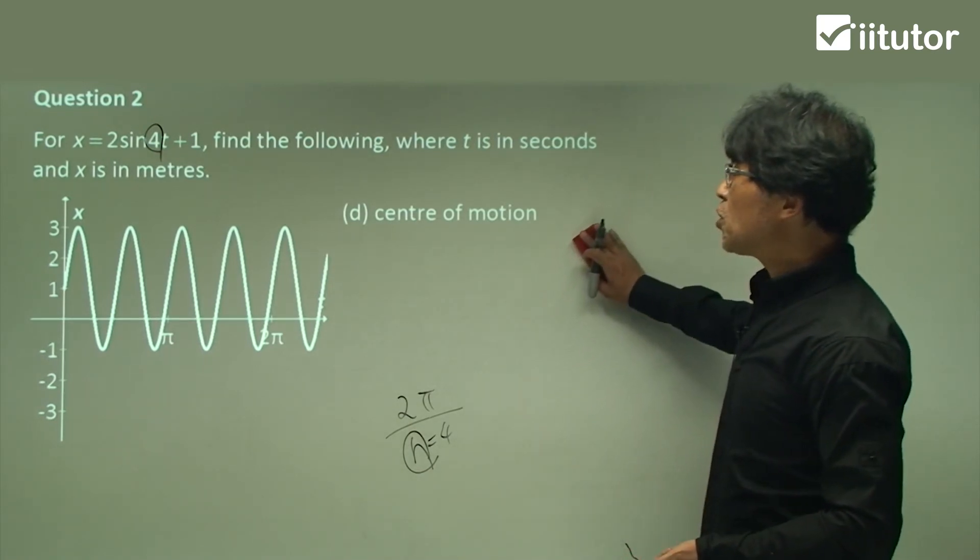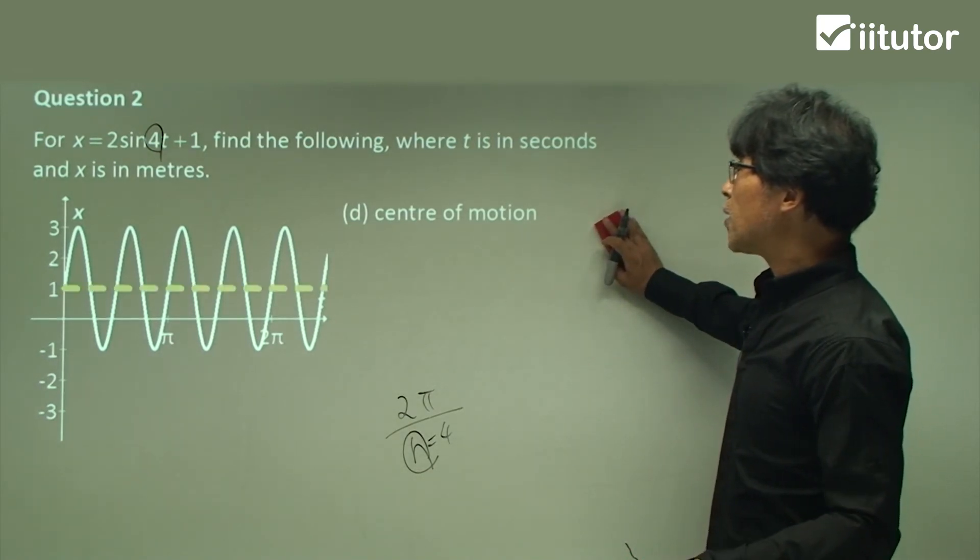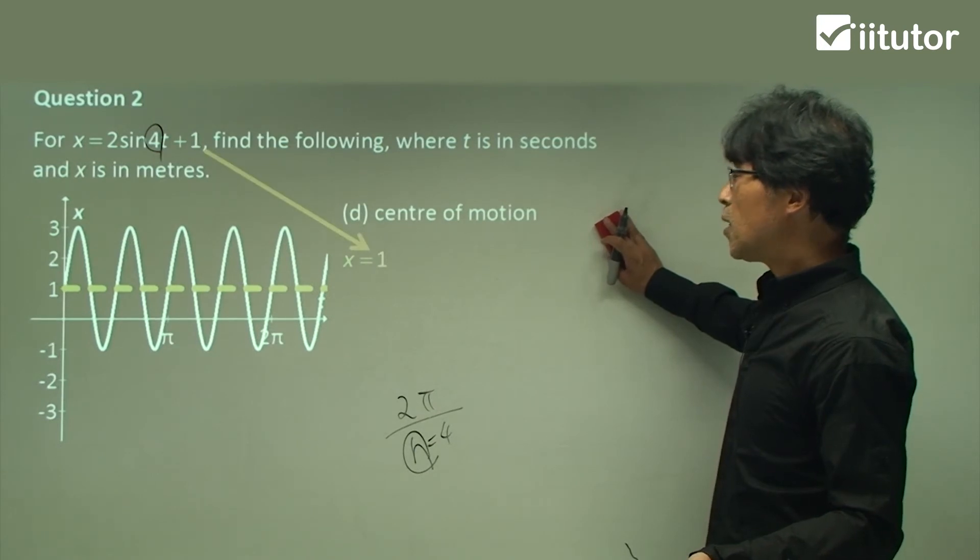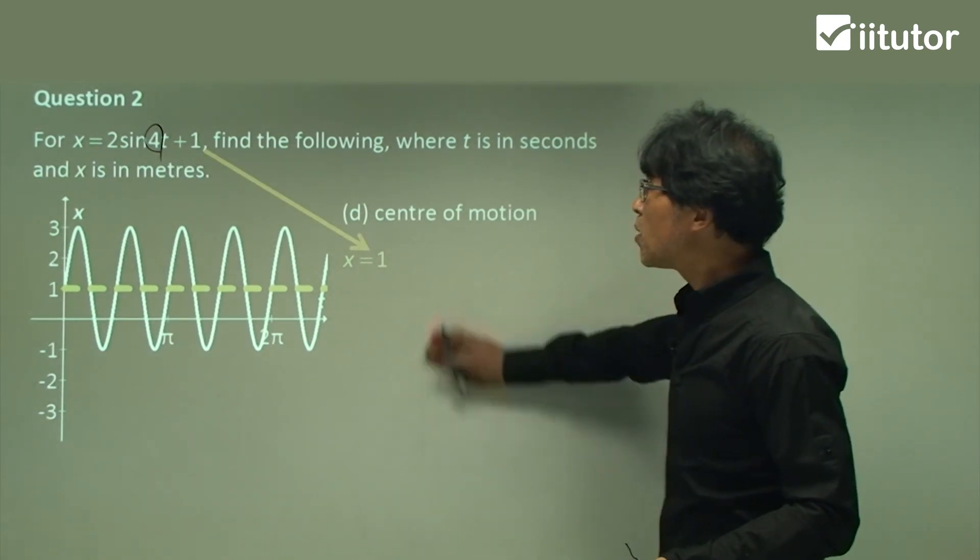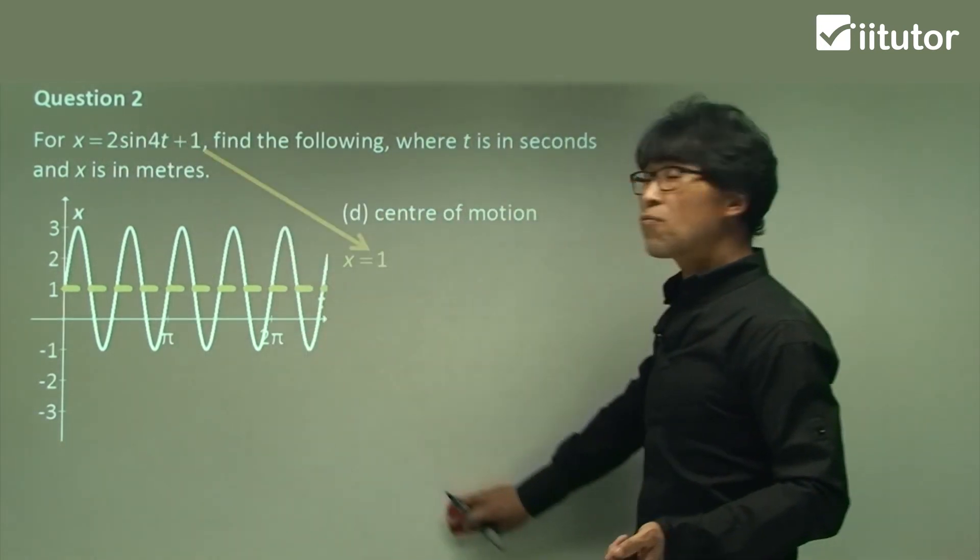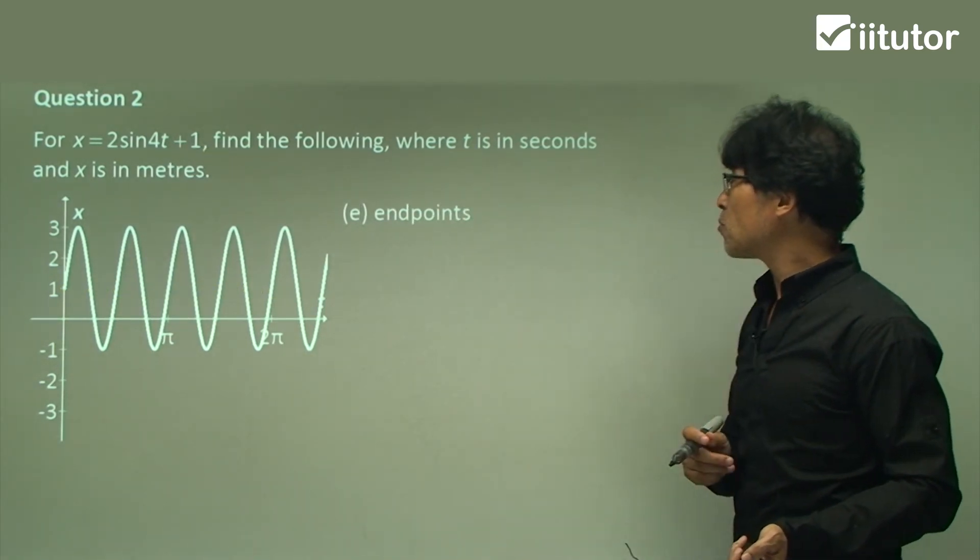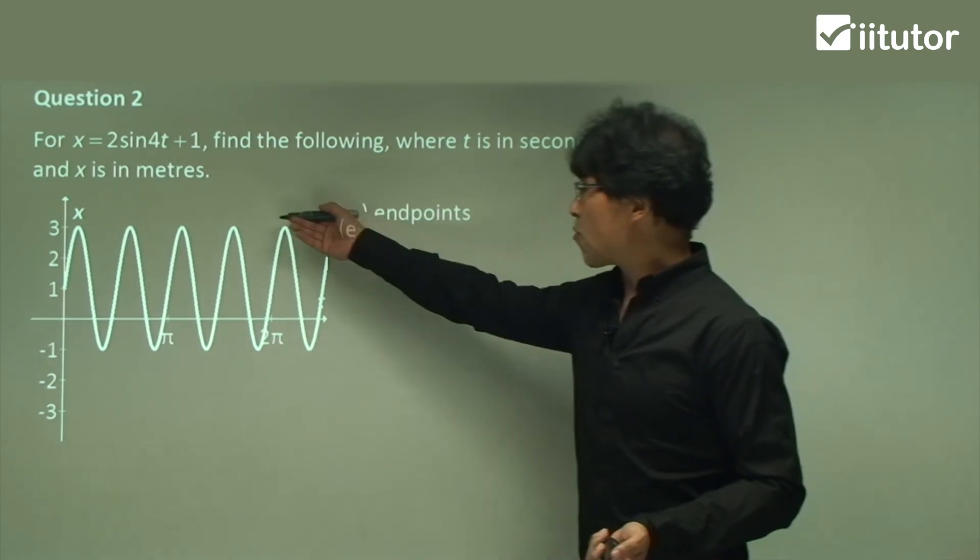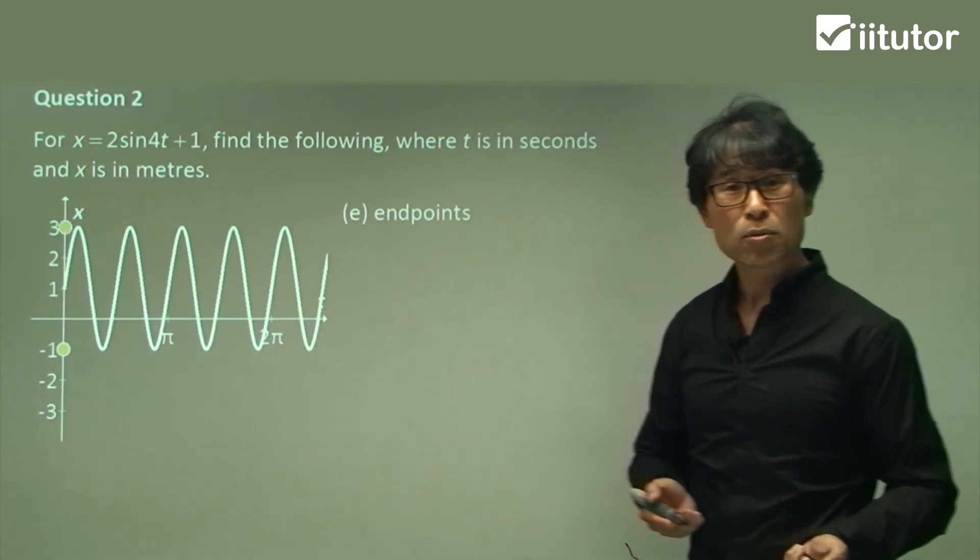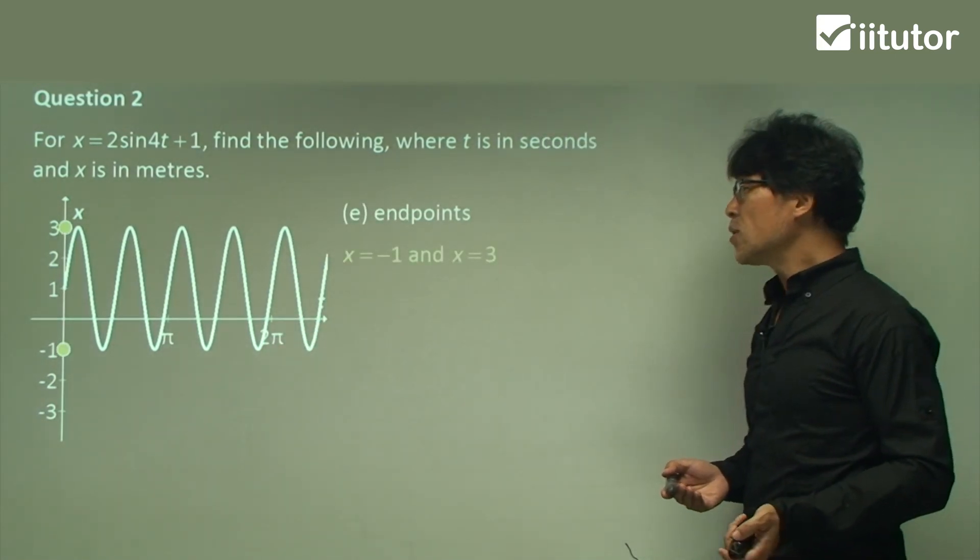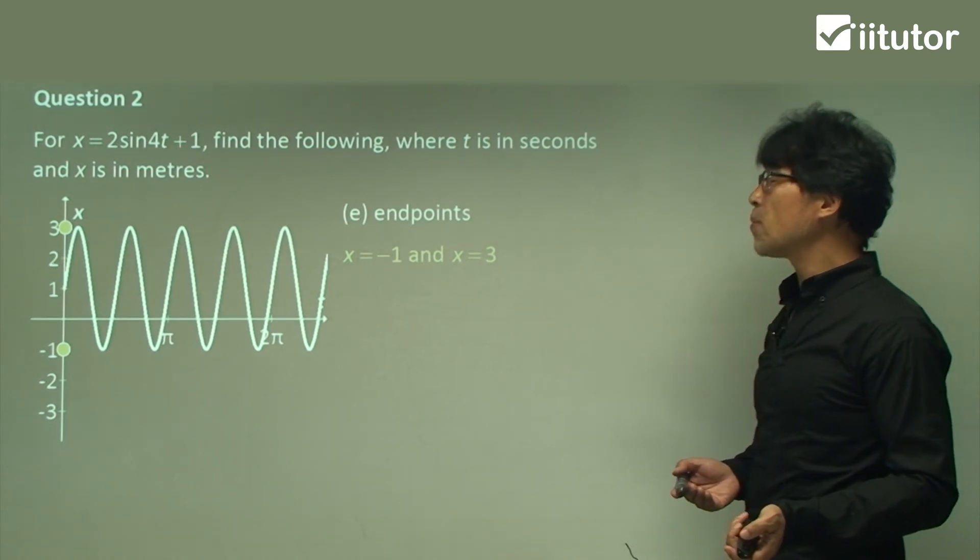The center of the motion is simply x equals 1. X equals 1 is coming from the last constant number from the equation. So that's the center of the motion. And the end point? 3 and negative 1, which is x equals 3 and x equals negative 1. So that's all about that.